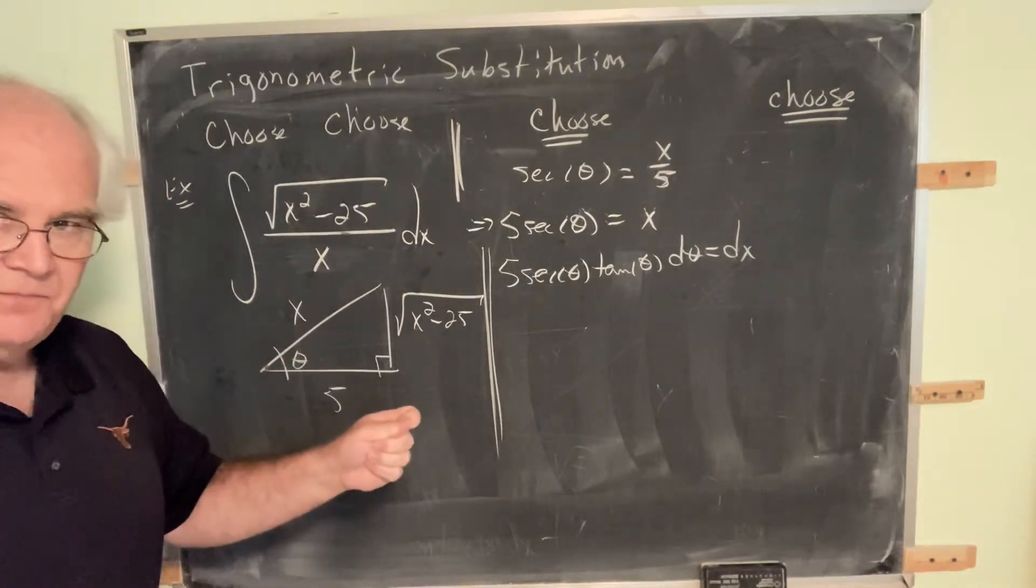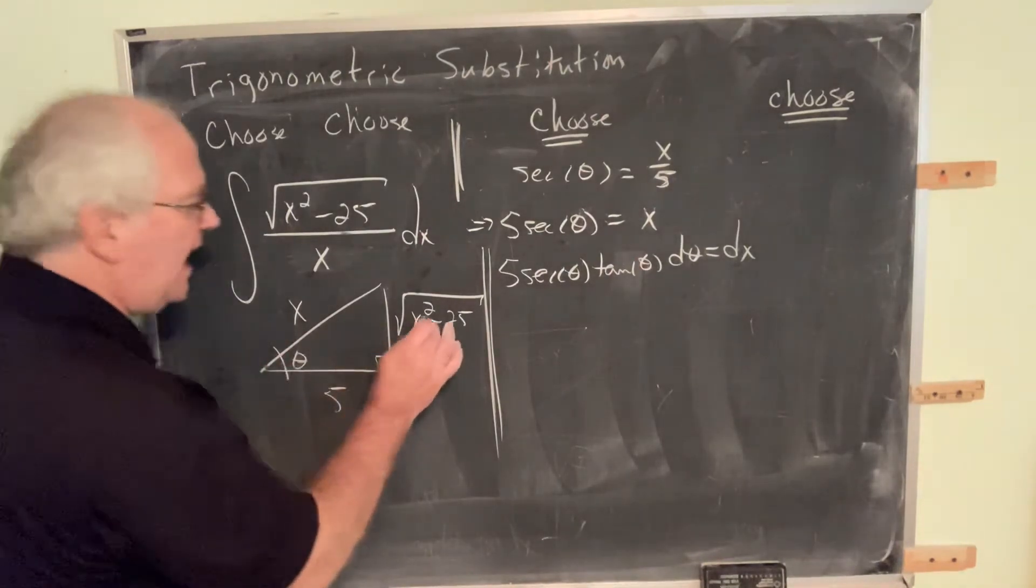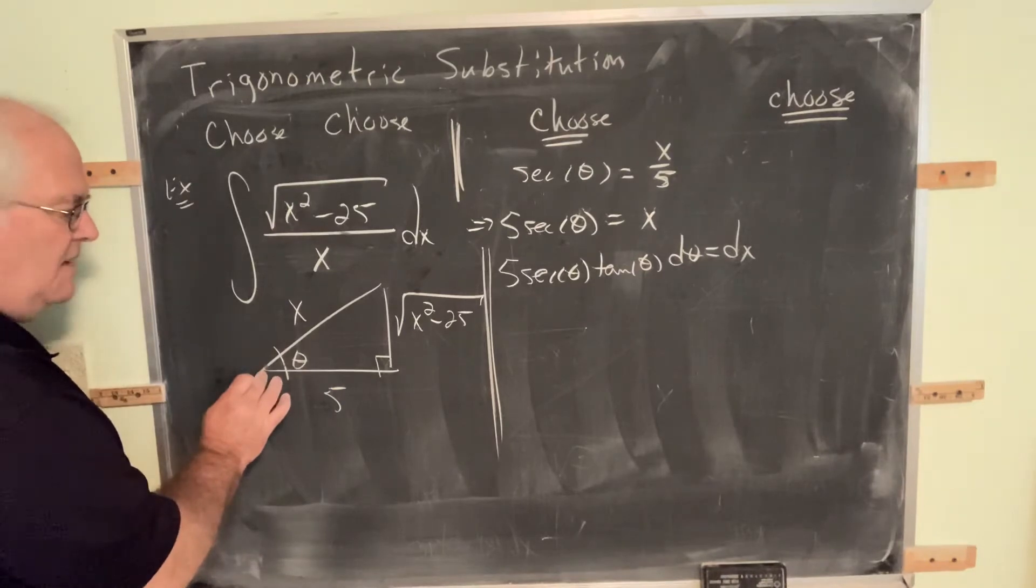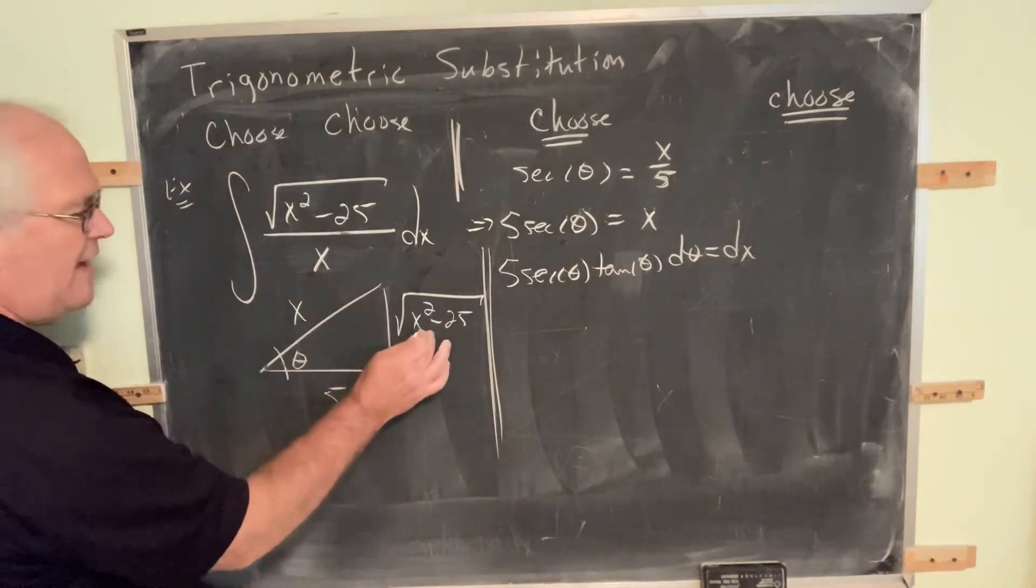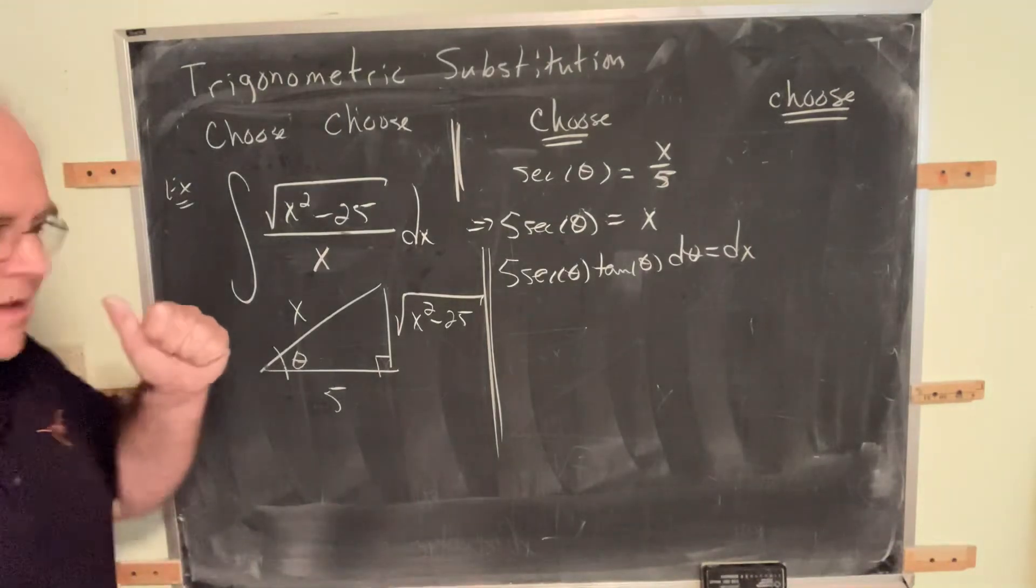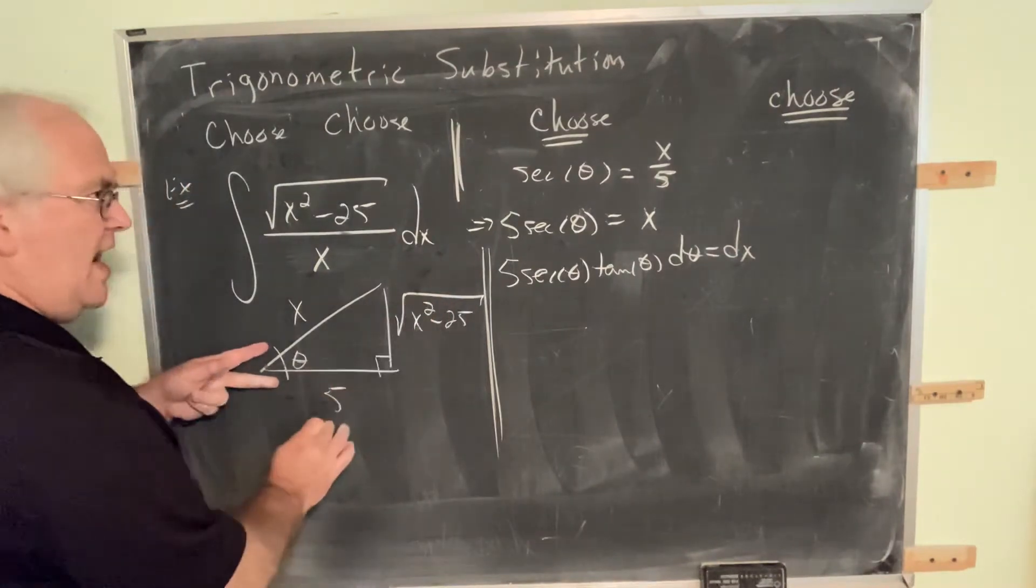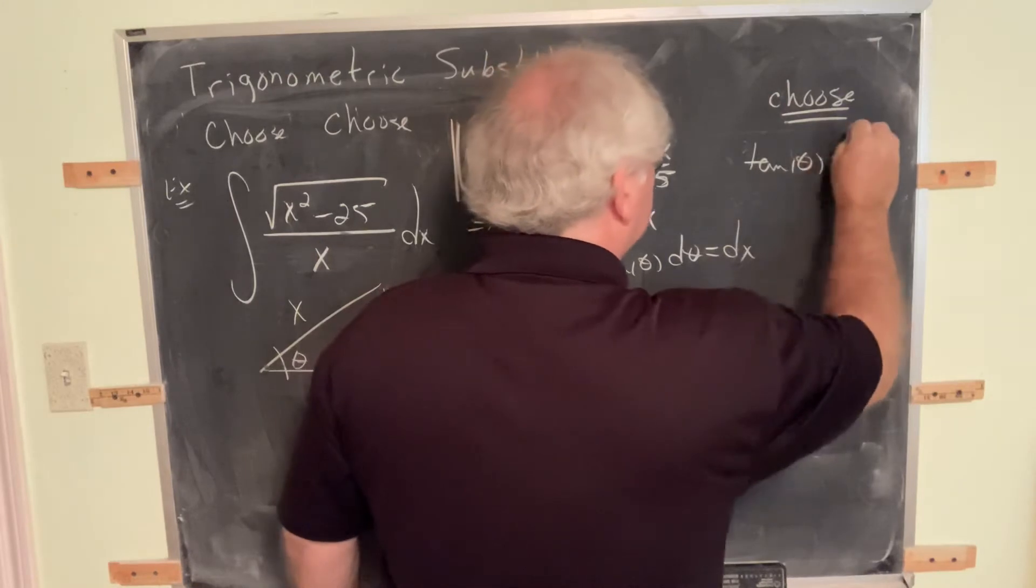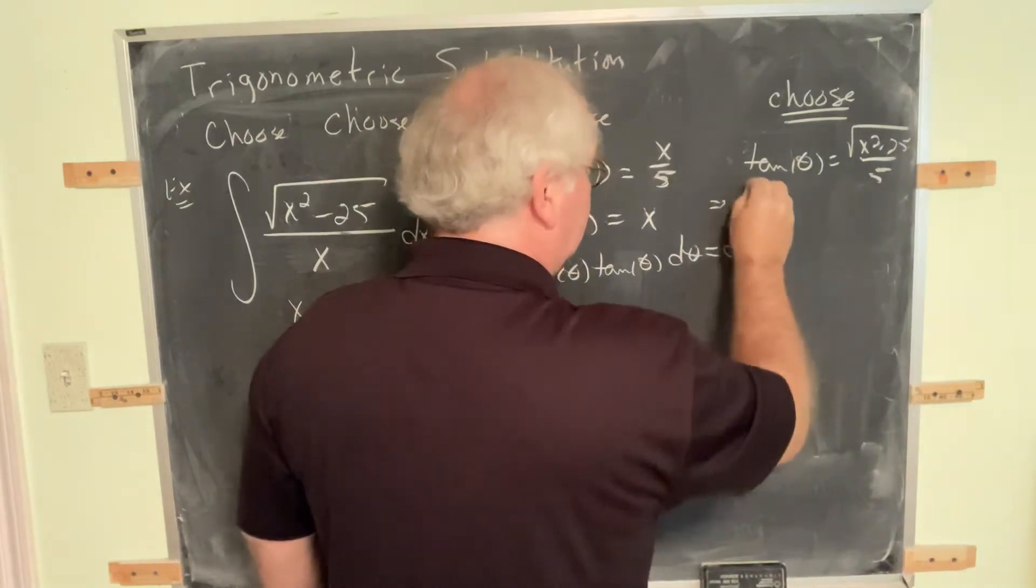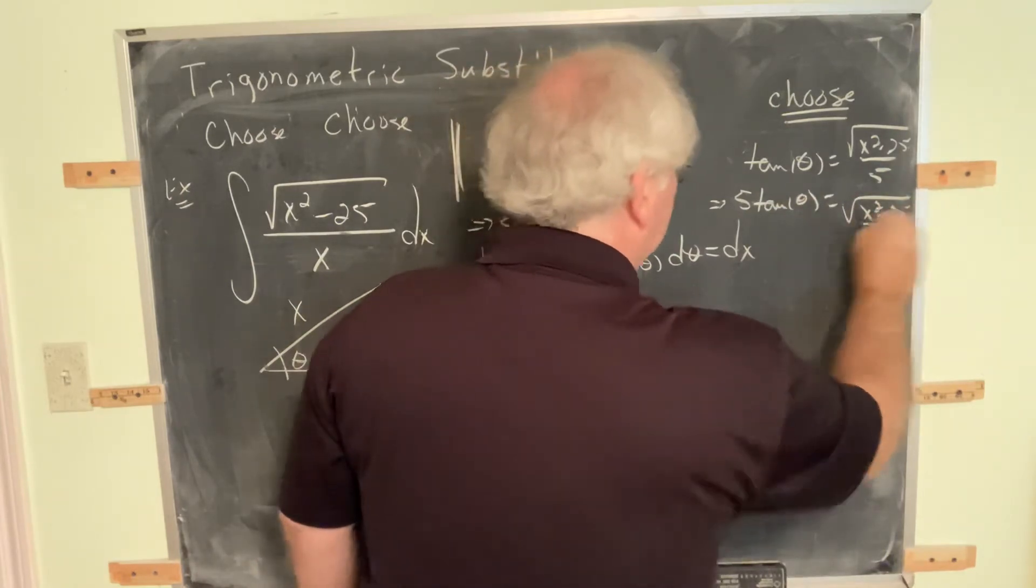That does involve the radical. We want the one that does involve the radical, and no variables in denominator. We could choose sine. Sine would be radical over x. No, no variables in denominator. We could choose cotangent. Cotangent would be adjacent over opposite. No, that would be a denominator. The only function that meets those two requirements does involve the radical and has no variables in denominator. In this case, it's tangent. Tangent of theta is radical over five. Move the five. Move the five across. Clear the fraction.